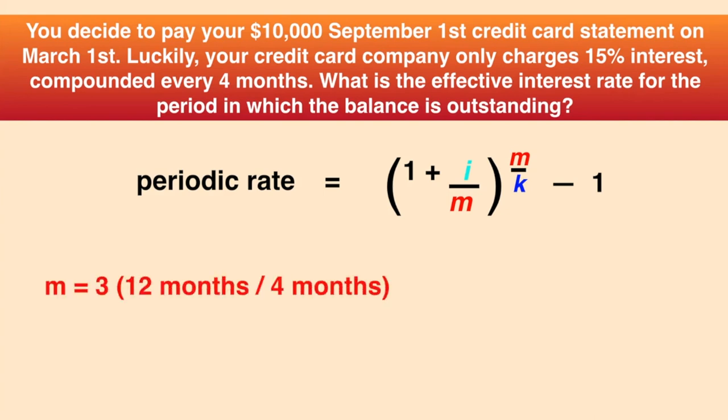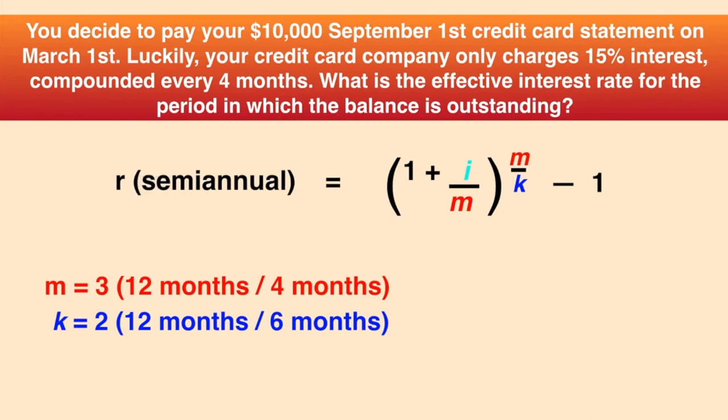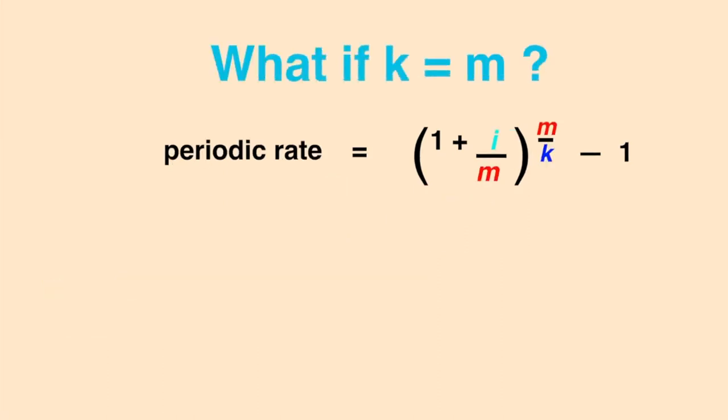There are six months between September and March, so k is two, since there are two six-month periods in a year. Essentially, we're looking for the effective semiannual rate. Thus, our effective semiannual rate is r equals 1 plus 0.15 over 3 to the power of 3 over 2 minus 1, or 7.6%. Notice that if k, the period for which we're calculating the period rate, is the same length as m, our actual compounding periods, then the effective period rate will just be APR over m, the same effective rate we've been using in our time value of money formulas.